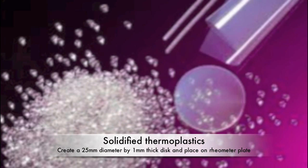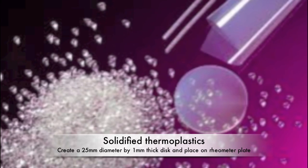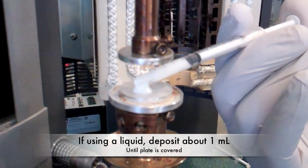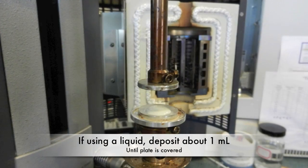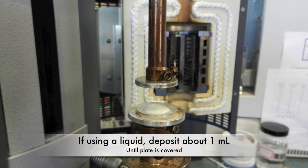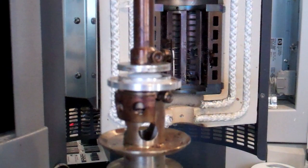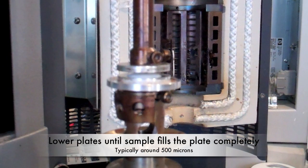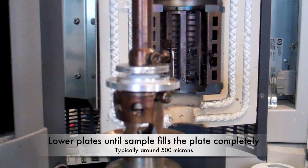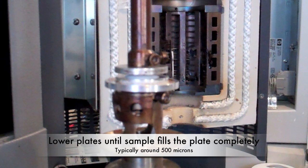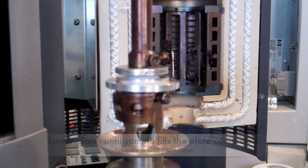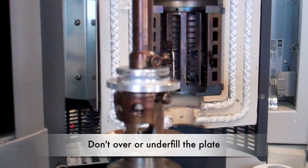If using a solidified thermoplastic, make a 25mm diameter disc that is 1mm thick and place on the rheometer plate. Deposit about 1ml of liquid onto the bottom plate or until most of the plate is covered. Lower the top plate by pressing the keys on the instrument's control panel. Slowly lower it until the sample completely fills the plate. This should be around 500 microns or the typical gap size. Try not to under or over fill the plates.